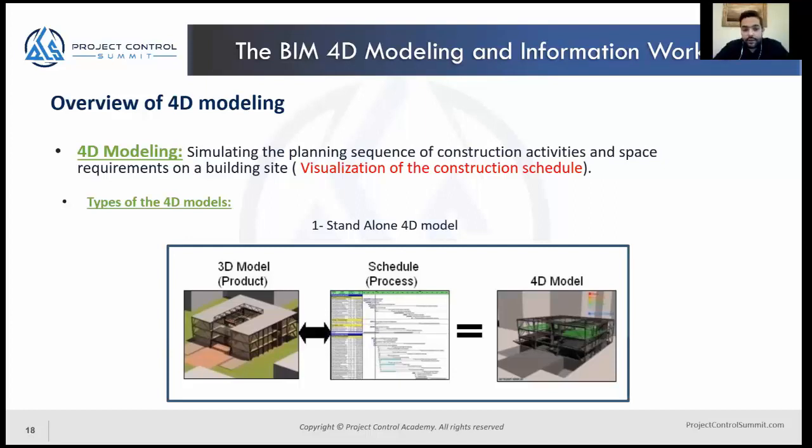Let's go through the types of 4D modeling. First type is standalone 4D modeling. We have one 3D model and one schedule. When we link each task in the schedule with the corresponding element in the 3D model, we have a single 4D model. That's the standard.